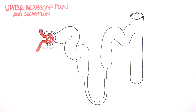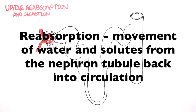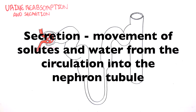It's important to understand some terminology. Reabsorption refers to the movement of water and solutes from the nephron back into circulation. Secretion is the movement of solutes from circulation back into the nephron, back inside the nephron tubule.